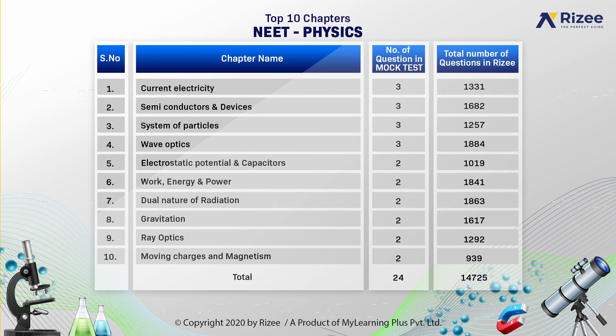Let us look at the mock test analysis conducted on 28 March 2021, subject-wise. These are the top 10 chapters of Physics. The number of questions given in our mock test from these 10 important chapters are 24 out of 45. The chapters are: Current Electricity — 3 questions; Semiconductors and Devices — 3 questions; System of Particles — 3 questions; Wave Optics — 3 questions.